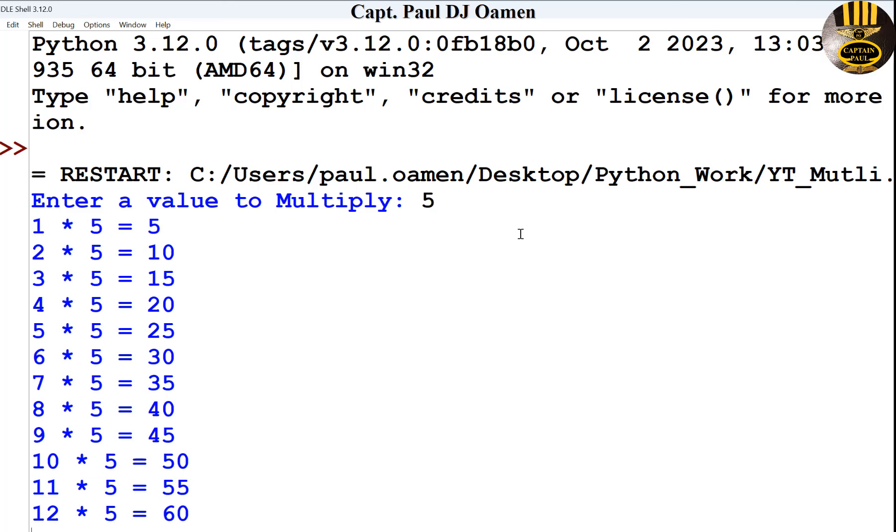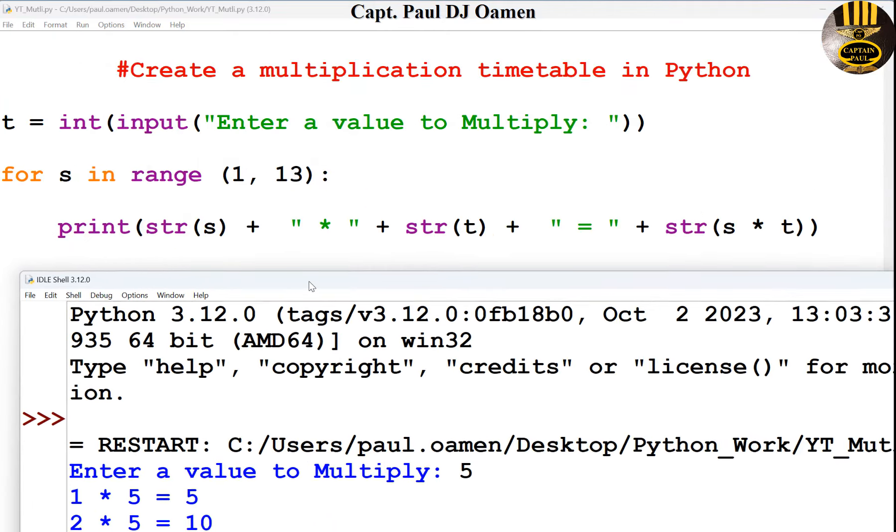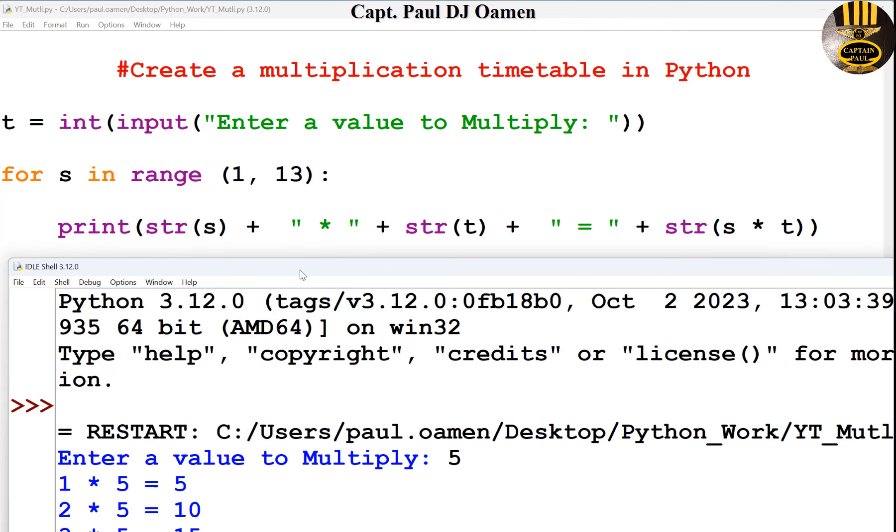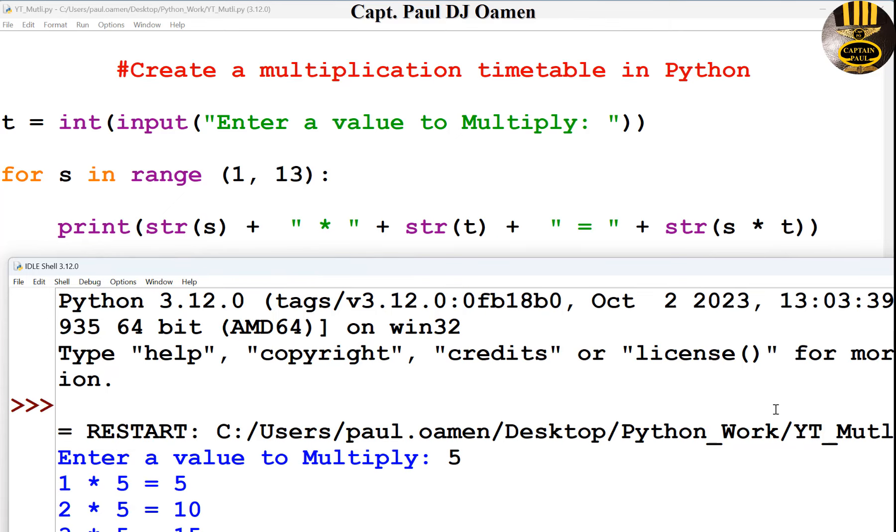And that's how you create your own multiplication timetable in Python. So before I go, let me show you guys the code one more time. That is it. So with that, I'm calling the end of this tutorial. Bye for now.